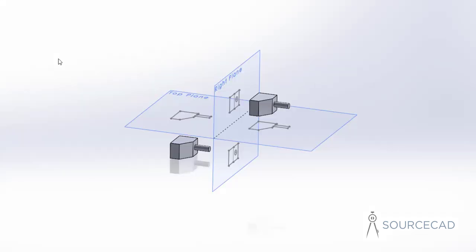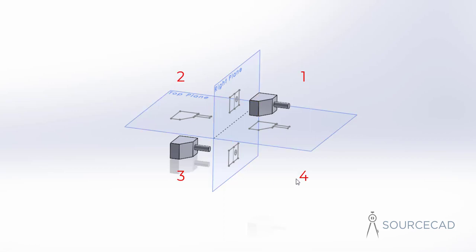Here I will use this example. We have a simple part, and the same part is added in this quadrant as well. This entire space is divided into four quadrants — the first, second, third, and fourth — using the right plane and the top plane.